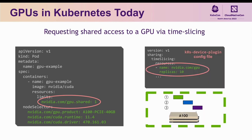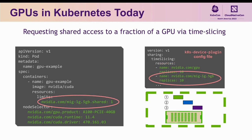In the last year or so, we also added support for sharing access to GPUs through over-subscription. On a per-node basis, cluster admins can configure the number of replicas they wish to over-subscribe each GPU, and users request access to these shared GPUs with the special .shared extension shown here. Under the hood, simple time slicing is used to swap one workload off and put another workload on the GPU after some fixed amount of time.